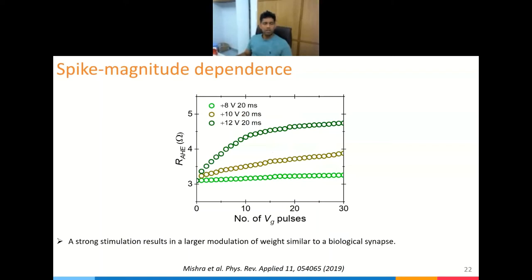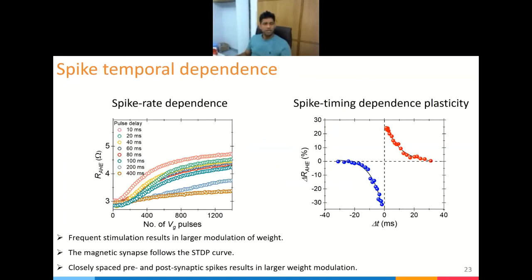Next is spike magnitude dependence: in a human synapse, a larger stimulus causes a larger or faster weight change. We see the same here — applying a gate voltage of 8 volts for 20 milliseconds gives a small change in anomalous Hall resistance, whereas a larger stimulus gives a much larger change. Next is temporal dependence: in the human brain, events occurring quickly form a strong memory. Similarly in our device, if multiple pulses are applied with very small delays between them, we see a large change in weight. If the gap between stimulus pulses is large, such as 400 milliseconds, the weight change is minimal.